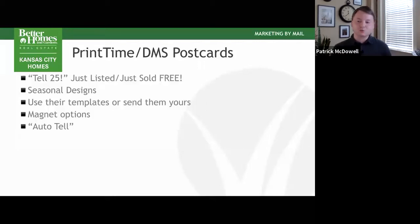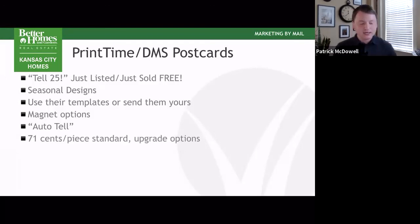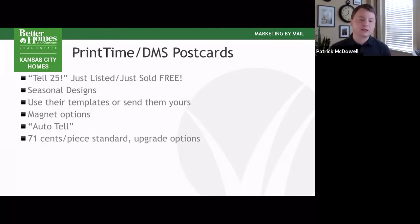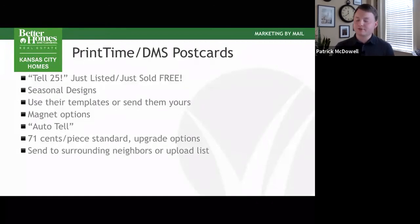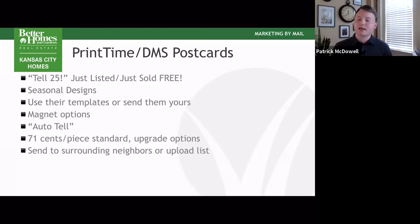DMS is about 71 cents a piece if you're not doing their free 25 ones. If you're going to pay for them on your own, you're going to pay about that 71 cents. Typically when you do your TEL25, you're inputting the property address and they pull the neighborhood list — the houses surrounding that property — and that's who they send those postcards to. You could change that if you wanted to — you could upload your own list and send them to your COI if you wanted to tell them you just sold a property. But probably better marketing dollar-wise to send them out to the surrounding neighborhood.